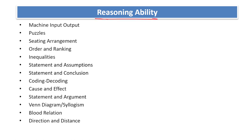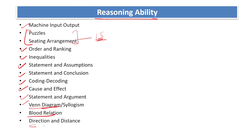In reasoning ability: machine input-output, puzzles and seating arrangement — expect 10-15 questions from puzzles and seating arrangements. Also order and ranking, inequalities, statements and assumptions, statements and conclusions, coding-decoding, cause and effect, statements and arguments, Venn diagrams, syllogism, inequalities, blood relations and direction sense test.